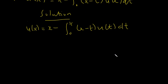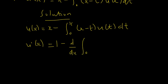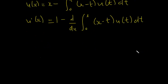So first of all we are differentiating each side of this equation. That gives us u'(x). The derivative of x with respect to x gives you one, then we have the derivative with respect to x of the integral from zero to x of (x minus t) u(t) dt. We are trying to get rid of this integral sign, so we have to differentiate under the integral sign.